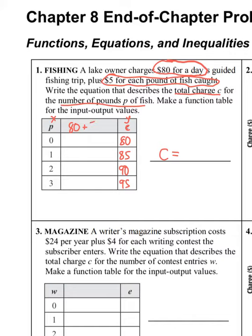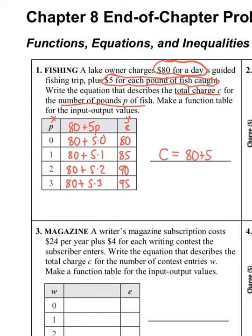What we see is $80 no matter what, plus $5 times however many pounds of fish you catch — so it's 5 times P. That gives us: $80 plus 5 times 0 = 80, $80 plus 5 times 1 = 85, $80 plus 5 times 2 = 90, and $80 plus 5 times 3 = 95. So the equation is C equals 80 plus 5P, and you could also write it as C equals 5P plus 80.